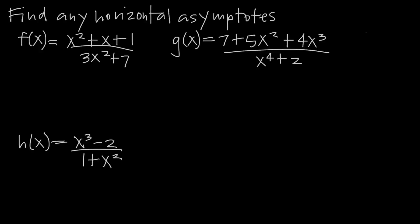In this video, we're talking about how to find horizontal asymptotes for rational functions. Remember that a rational function is just a fraction. Here we have f, g, and h, which are all rational functions because they're all fractions. And we need to find any horizontal asymptotes for each function.